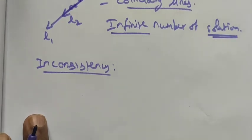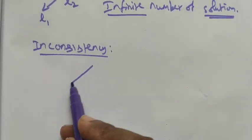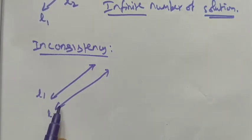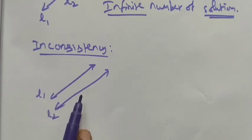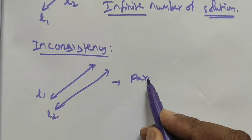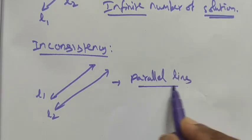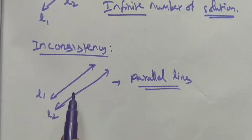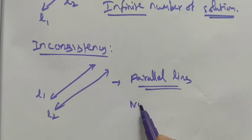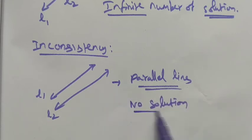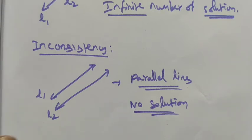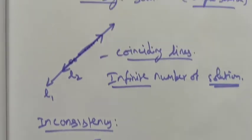For inconsistency, the two lines are not intersected. If the two lines are not intersected, they are parallel — L1 and L2 are parallel. With parallel lines, there is no intersection and no coinciding. If the two lines do not meet at one place or many places, we cannot find a solution. So it has no solution. Consistency means we have a solution; inconsistency means we have no solution.